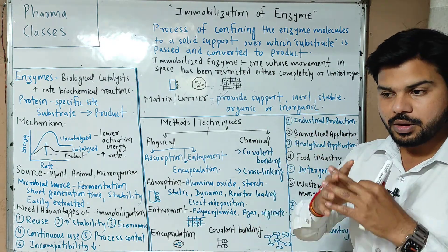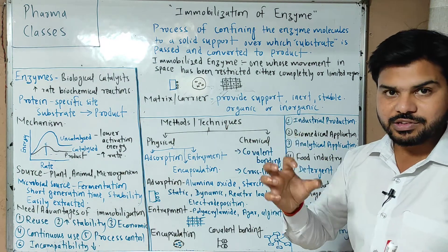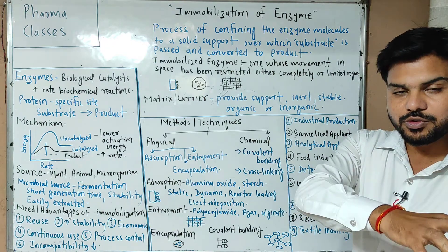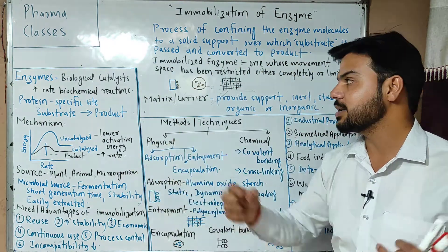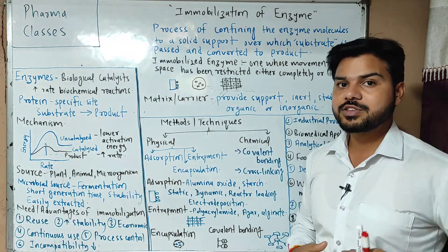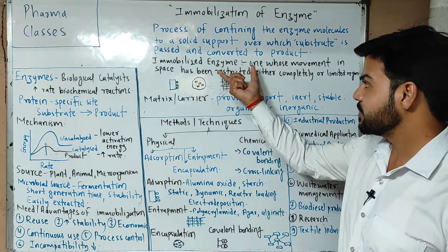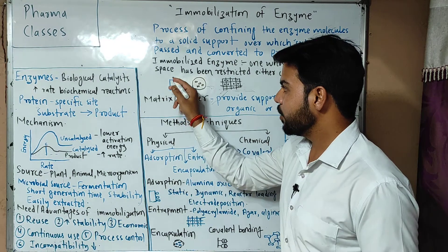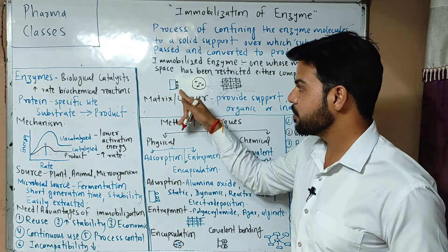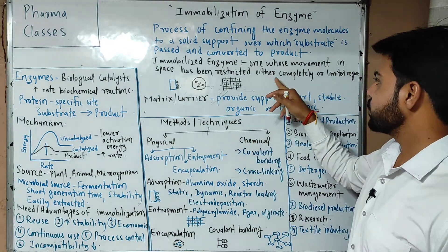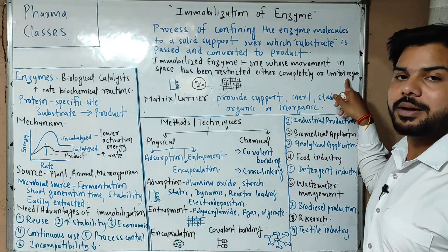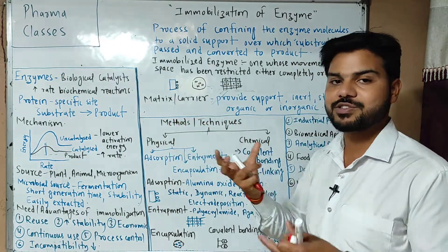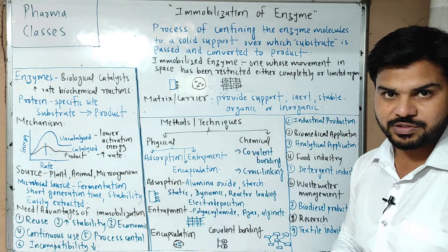We can pass the substrate and convert it to product. The term 'immobilized enzyme' means that the movement of the enzyme in space has been restricted or limited to a particular area — it is confined to a solid support in a limited region. So we call it an immobilized enzyme.